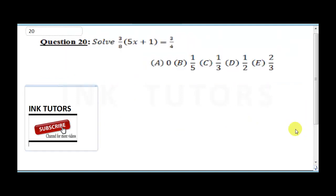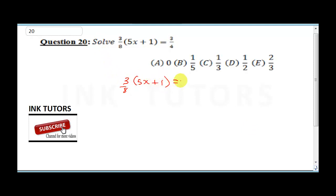Question 20 says: solve the equation 3(5x + 1) over 8 equals 3 over 4. I prefer to write it as 3(5x + 1) all over 8 equals 3 over 4.